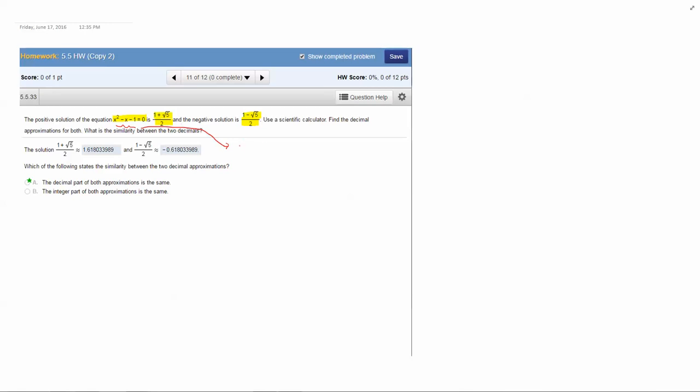The quadratic formula is x equals negative b plus or minus the square root of b squared minus 4ac all divided by 2a, where a is the coefficient of the x squared term. For this trinomial a would be 1, b is the coefficient of the x term which is negative 1, and c is the constant term which is negative 1.